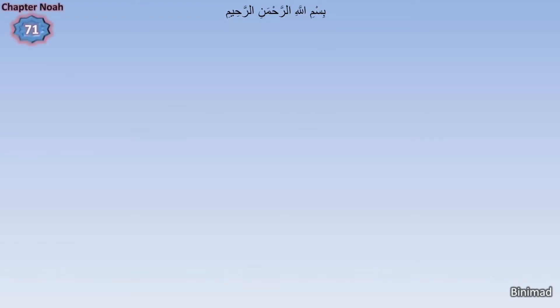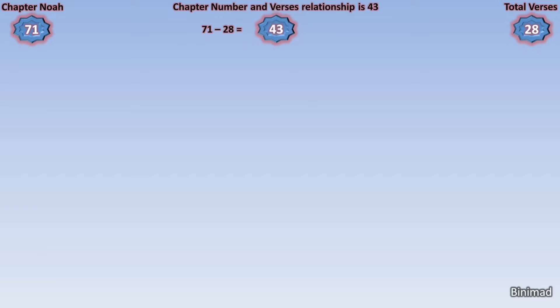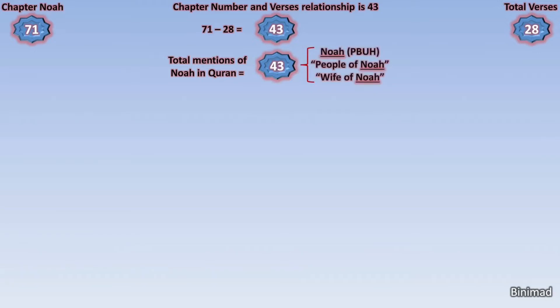Researchers such as Shaykh Bassam Jarrar have presented some very interesting findings regarding the mathematics of the Prophet Nuh in the Quran, and they truly are amazing. Chapter Nuh in the Quran is Chapter 71. The number of verses in this chapter is 28. This makes the relationship between the two the number 43, because that is the difference between the chapter number and the verse count. The first astonishing surprise is that Nuh was mentioned in the Quran exactly 43 times.